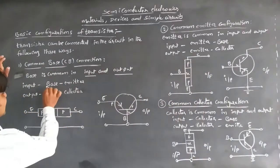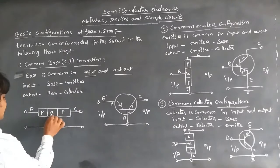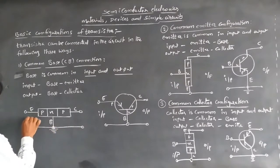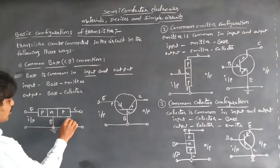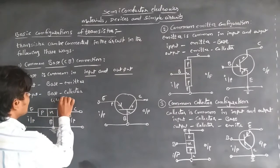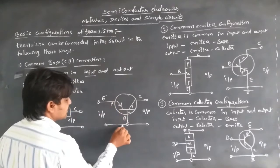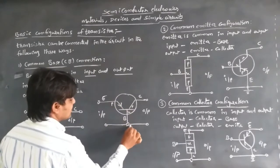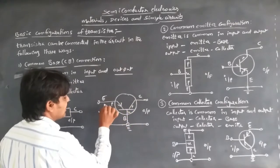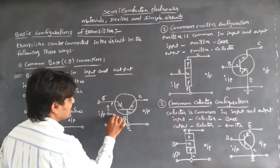In this PNP transistor, the base is grounded and is common for both input and output when connecting in the circuit. Here in the circuit diagram, the emitter and collector are identified, and this emitter-base junction is connected with a small forward bias.